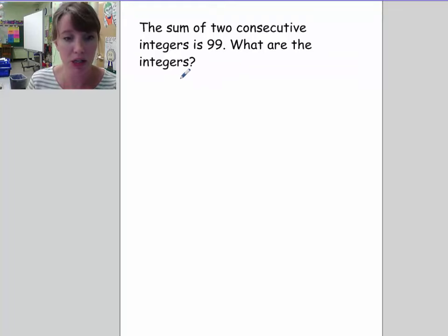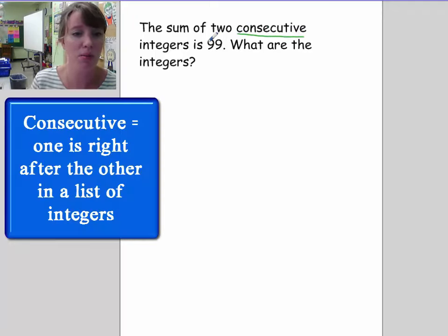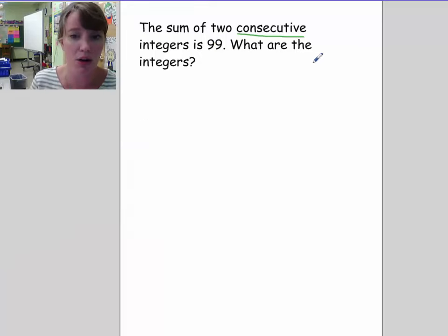So just mentioning this, you could probably do this in your head, right? If the sum of two integers and they're right next to each other, consecutive means that they're right next to each other. If the sum of them is 99, it's probably somewhere around 50, so maybe it's 49. I already think it's 49 and 50, because 49 and 50 is going to get 99.